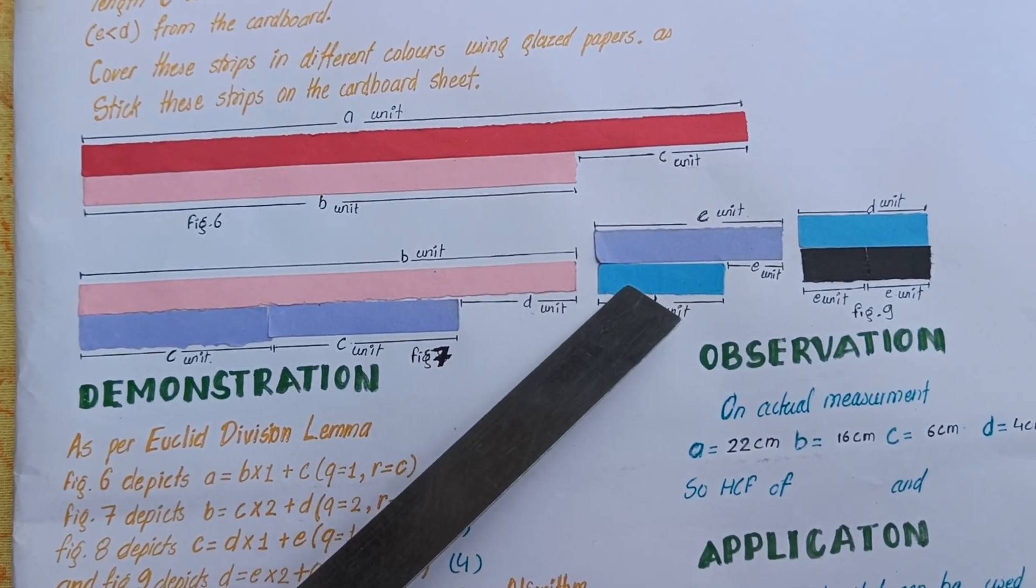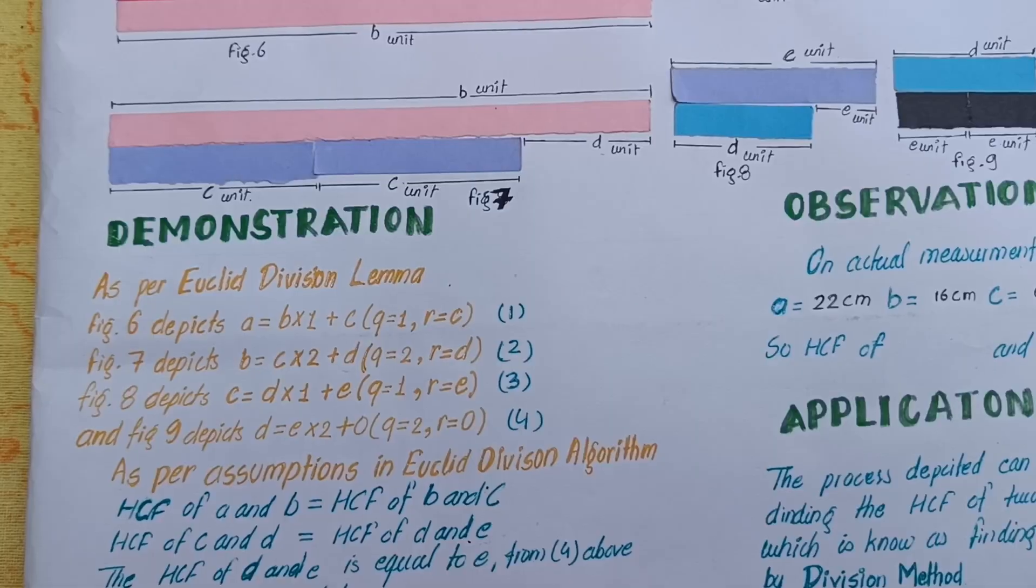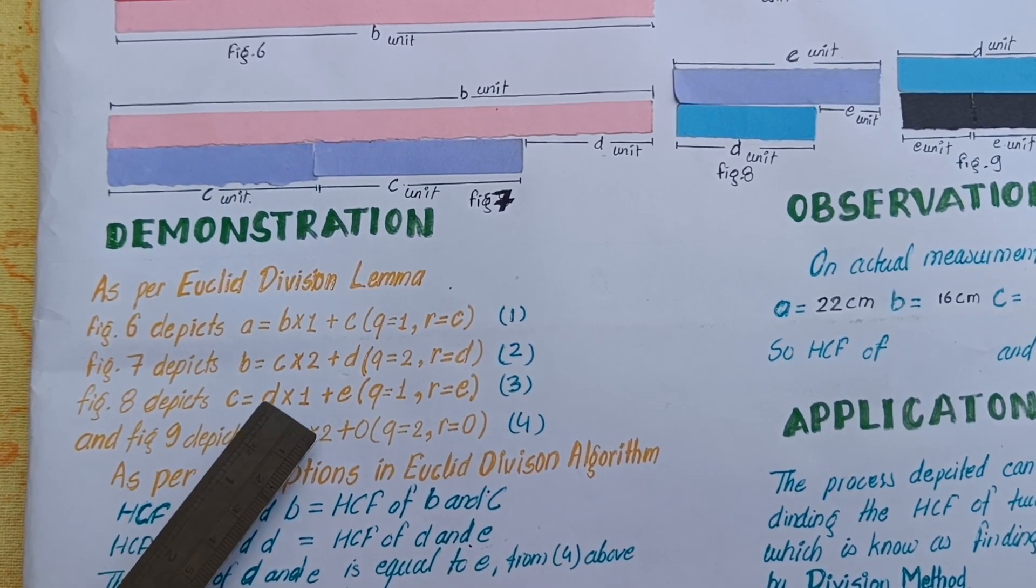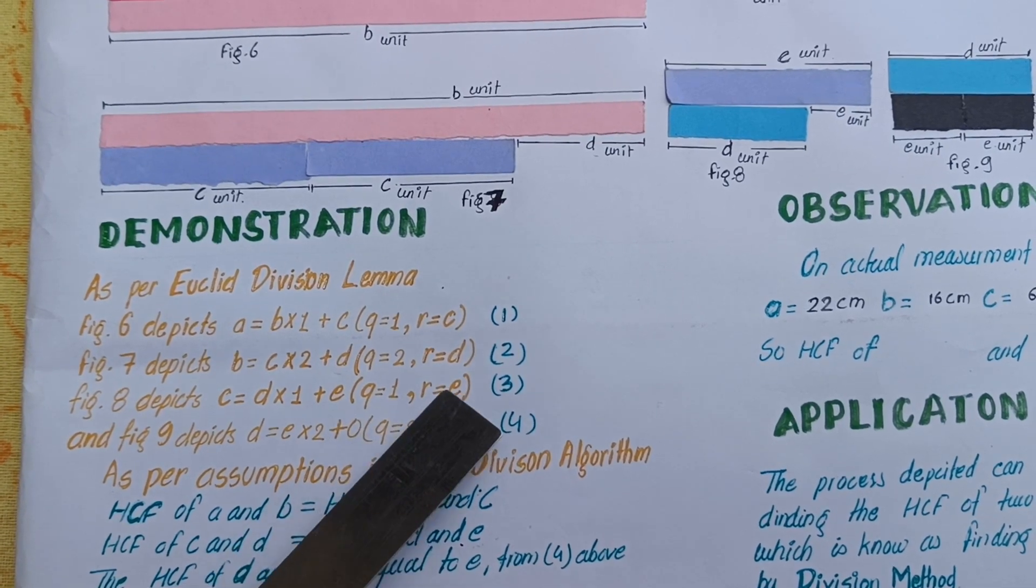In the third step, C divided by D. It divides 1 time and E is the remainder. It means C equals D times 1 plus E. Here 1 is the quotient and E is the remainder.